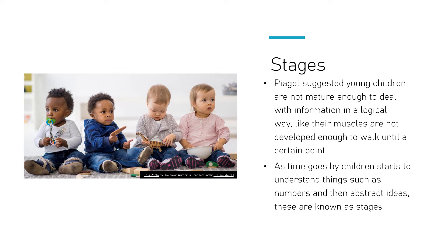A good way to think about this is walking. Children generally walk around the age of one — some earlier, some later — but they can't walk at two months because they haven't developed enough: the muscle mass isn't there, the thinking isn't there. There needs to be a stage, a critical period, before they can eventually walk. It's the same for thinking. As time goes by, children start to understand numbers and abstract ideas — things you can't see or touch, like what is a society or what is morality. They develop this at certain times and in a certain order.